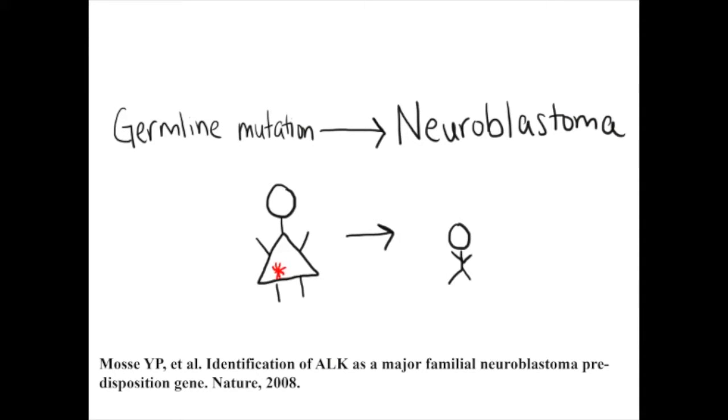Current research suggests that certain types of neuroblastoma may result from germline mutations in the gene that codes for anaplastic lymphoma kinase, or ALK, which plays a role in the development of nerve cells and may be a tractable therapeutic target.